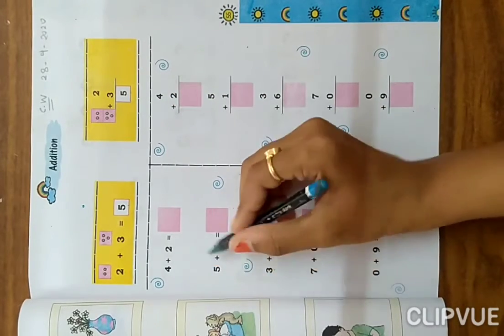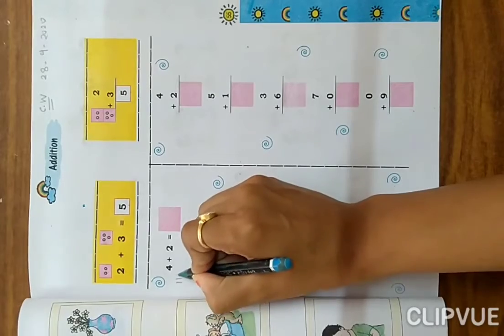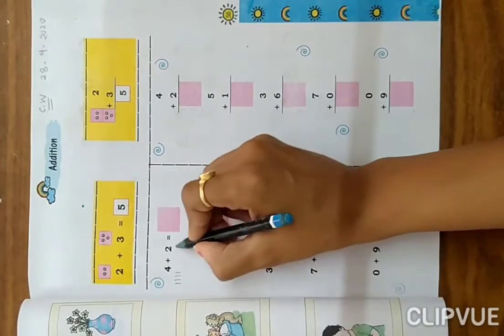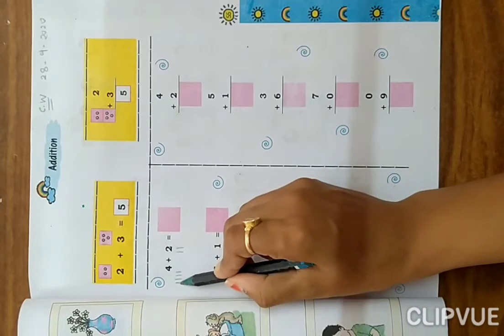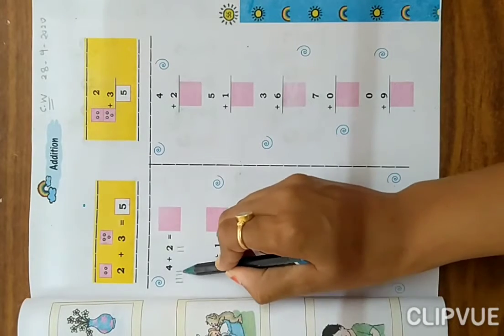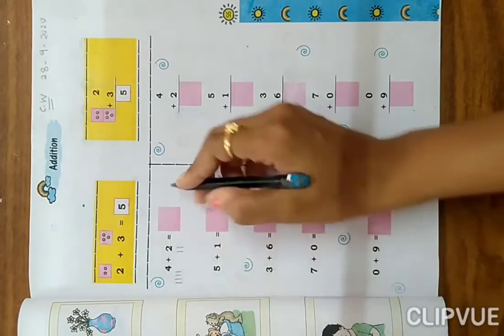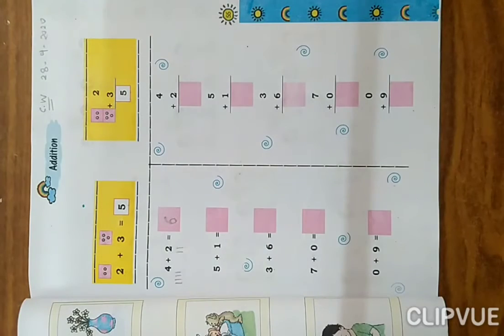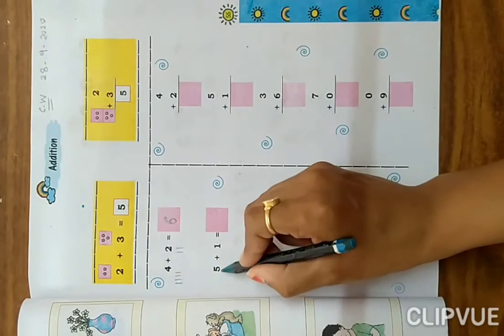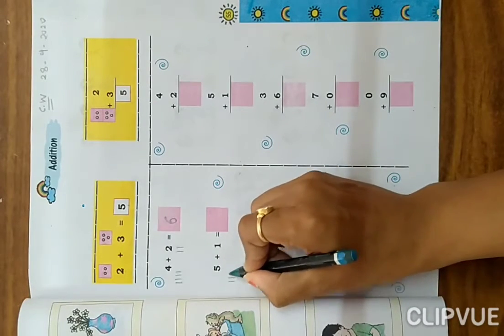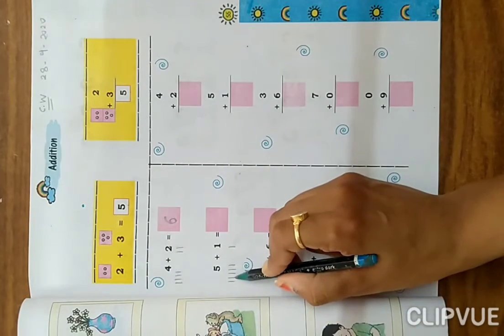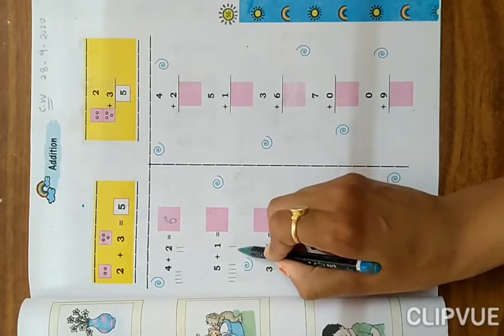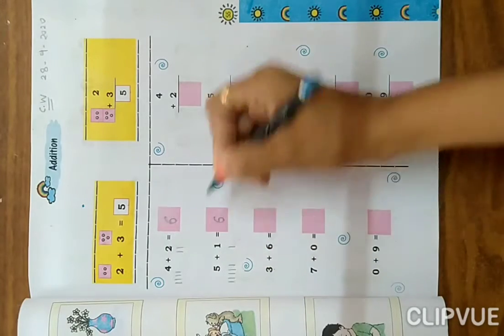Now look at here: 4 plus 2. So four, one, two, three, and four. And here two, one, two. Count all together: one, two, three, four, five, six. So write down here 6. Same like that, 5 plus 1: one, two, three, four, five, and here one, so six. Write here 6.